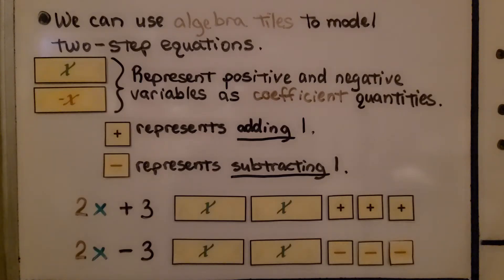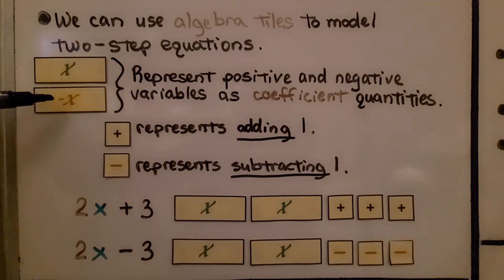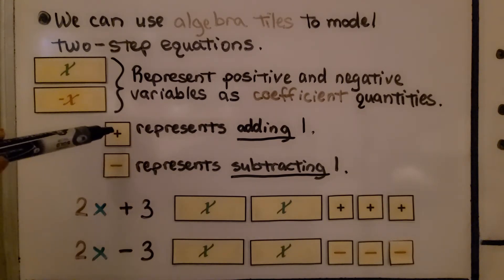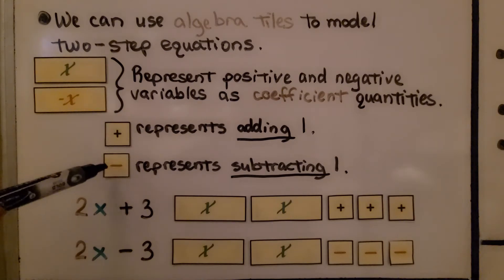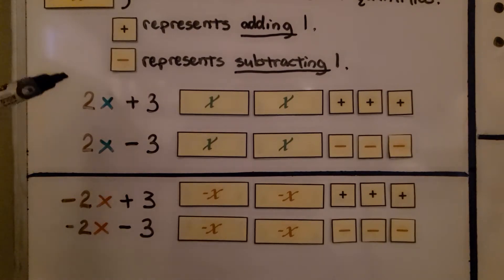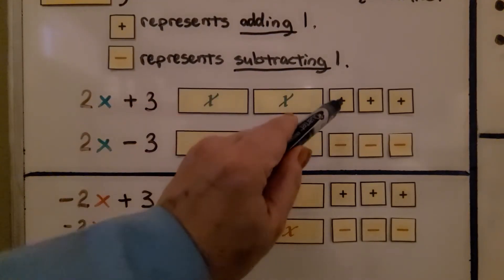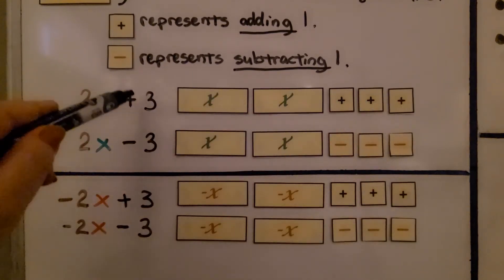We can use algebra tiles to model two-step equations. We have an x tile and a negative x tile. These represent a positive and negative variable. We also have a plus tile that represents adding 1, and a minus tile that represents subtracting 1. For 2x plus 3, we have 2 x-tiles and 3 plus tiles for plus 3.